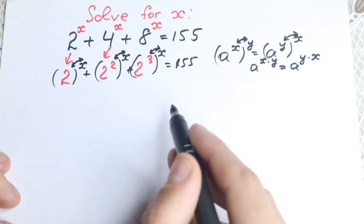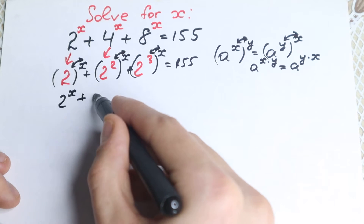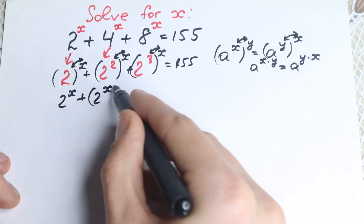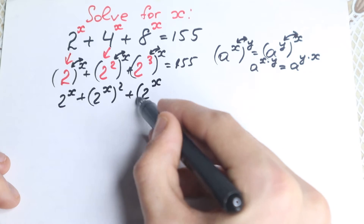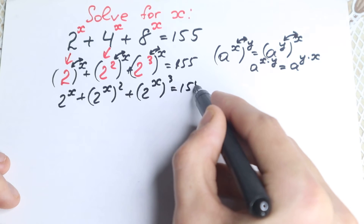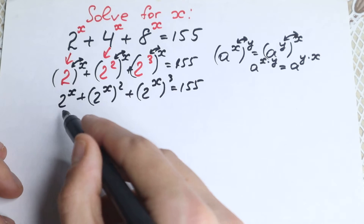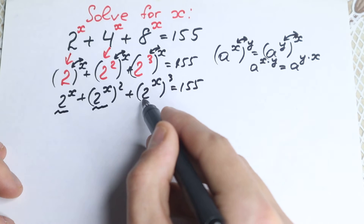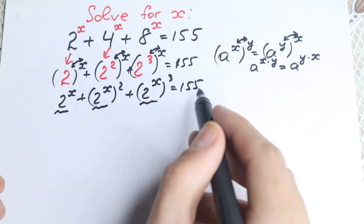Now let's change our powers. If we apply the rule of interchange, we will have 2 to the x, plus 2 to the x squared, plus 2 to the x cubed, equal to 155. Since we have the same element 2 to the x appearing throughout, we can write a substitution.